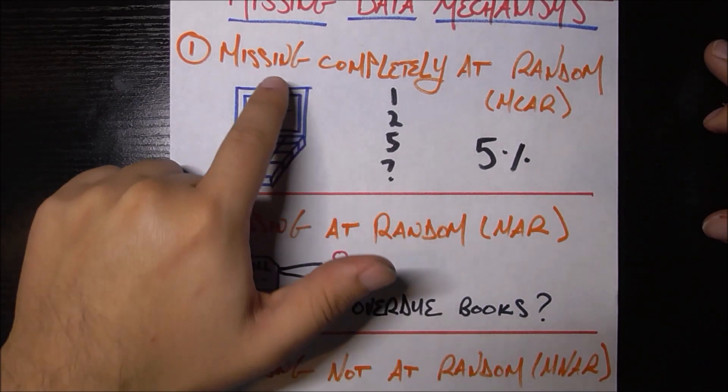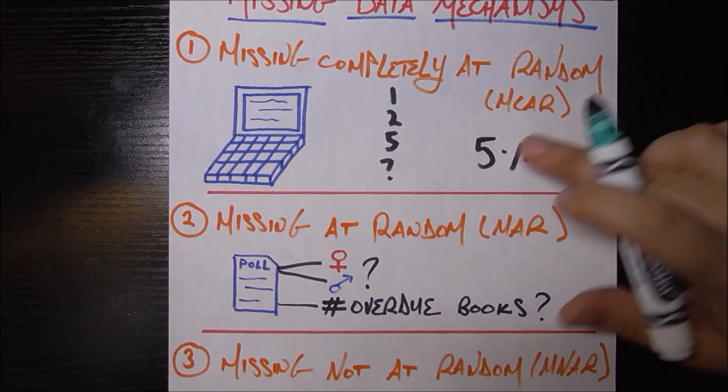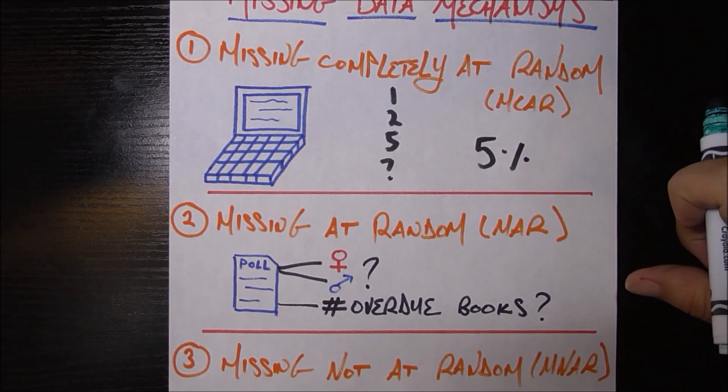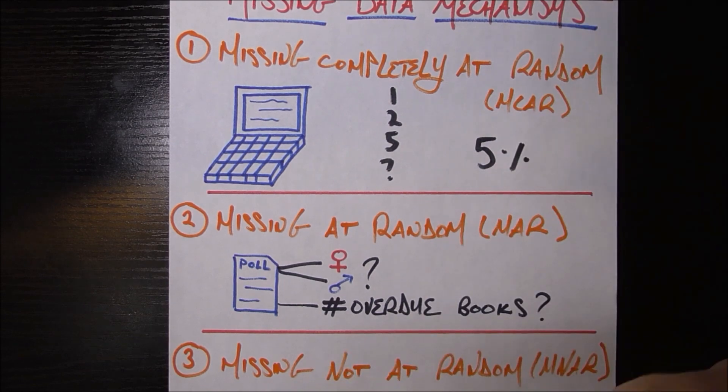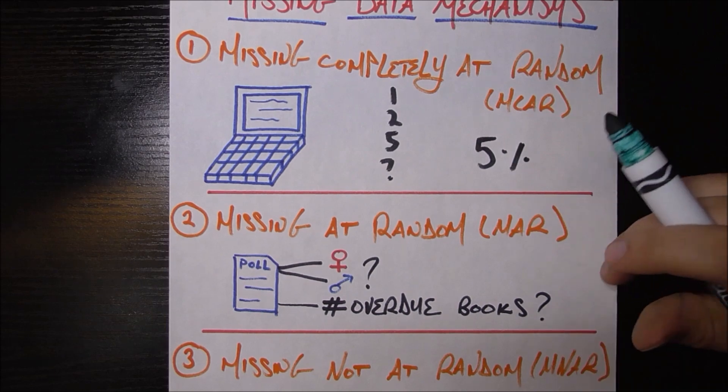This is a very perfect case of something that's missing completely at random, in which this 5% error rate, this 5% missing rate rather, is not dependent on anything at all. It's just 5%, each value has a 5% chance of being missing.